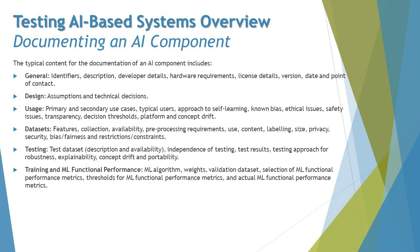In this tutorial, we'll be trying to understand what are the important components which we look forward to document for an AI-based system while working on it. The typical contents for the documentation of an AI component include several options. Starting with general information — identifiers, descriptions, developer details, hardware and requirements, license details, version date, and point of contact.